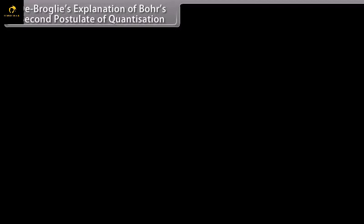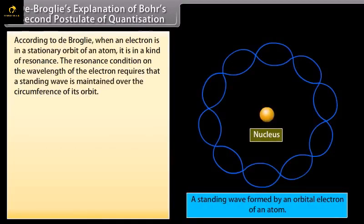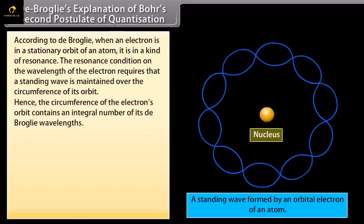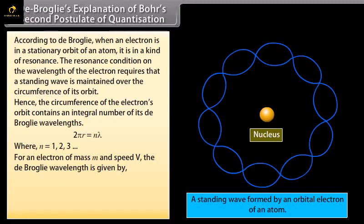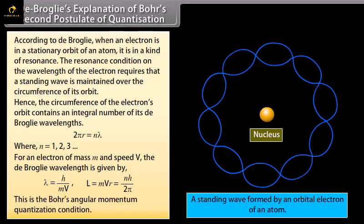De Broglie's explanation of Bohr's second postulate of quantization: De Broglie explained the quantization condition on the angular momentum of an orbiting electron. According to de Broglie, when an electron is in a stationary orbit of an atom, a standing wave is maintained over the circumference of its orbit. Hence the circumference of the electron's orbit contains an integral number of its de Broglie wavelengths: 2πr = nλ, where n = 1, 2, 3 and so on. For an electron of mass m and speed v, the de Broglie wavelength is given by h/mv. This may be written as mvr = nh/2π, which is Bohr's angular momentum quantization condition.